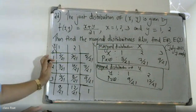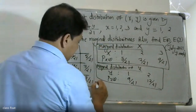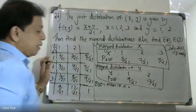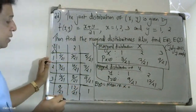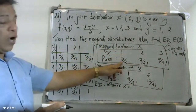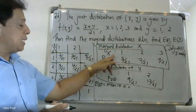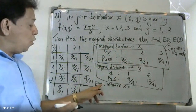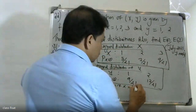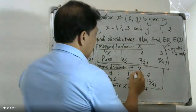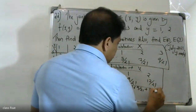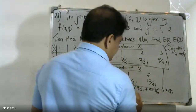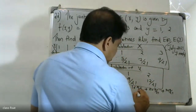The expectation of X, that is the mean of X, is computed as: E(X) = 1 × (5/21) + 2 × (7/21) + 3 × (9/21). So that is 5/21 + 14/21 + 27/21.